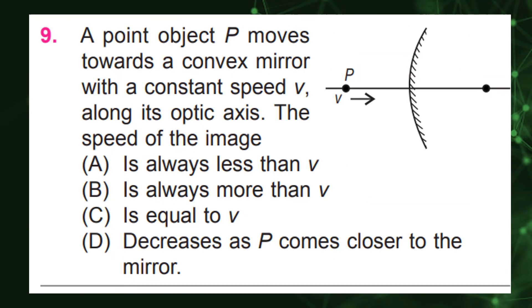A point object P moves towards a convex mirror with a constant speed V along its optic axis. The speed of the image is always less than V.